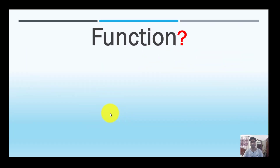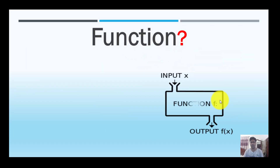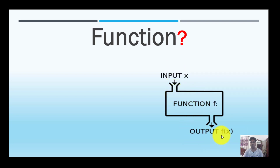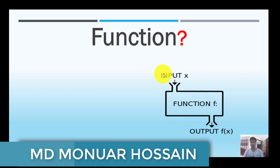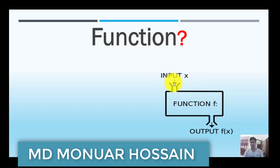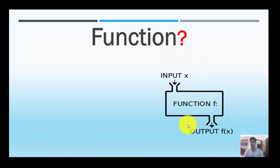Next: what is a function? A function can be shown using a diagram. The input is called the X variable, and the output is called Y. We can see how the input is related to the output.